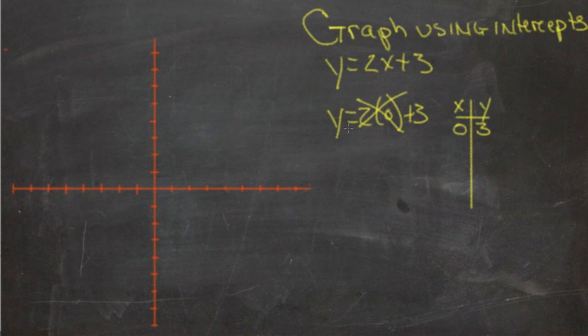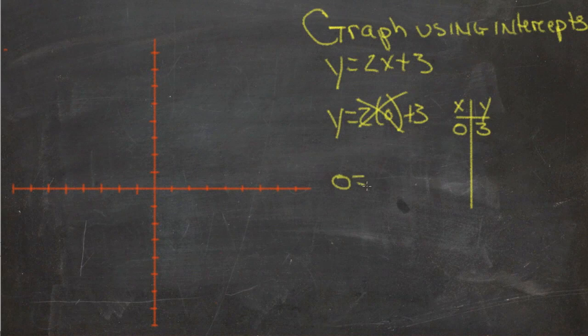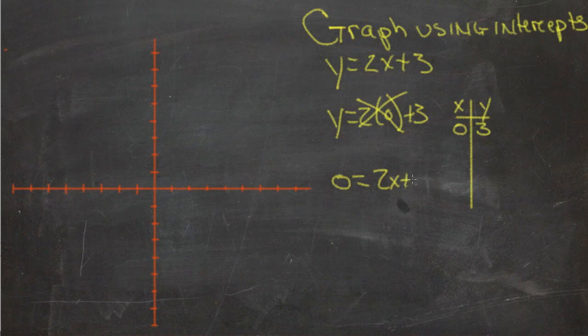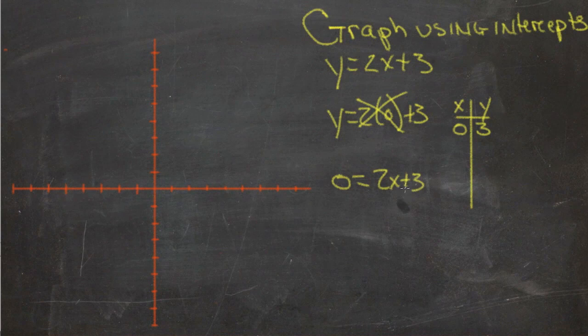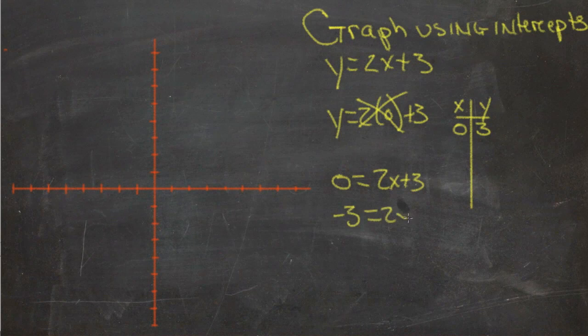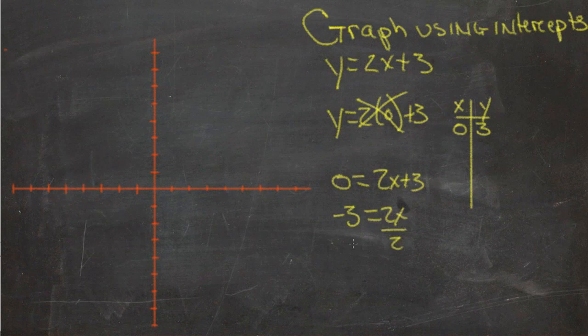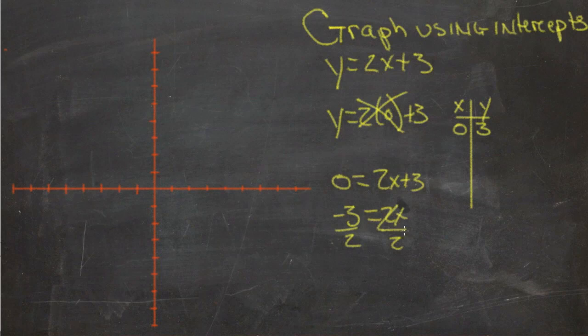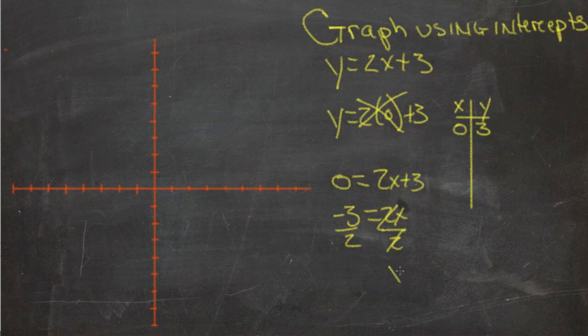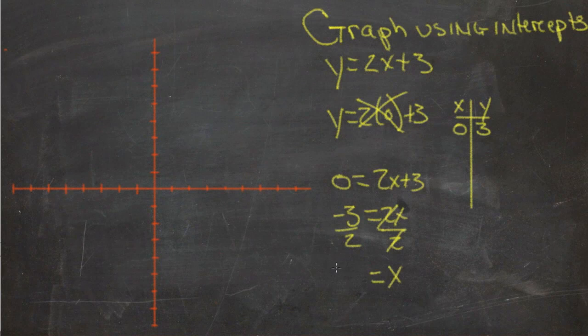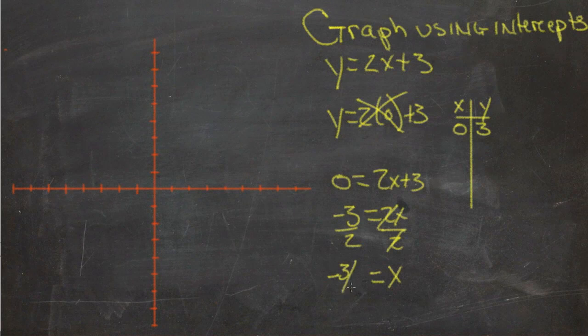And then we'll substitute in 0 for y and we get 0 equals 2x plus 3. So then we need to move the 3 to the other side. We get negative 3 equals 2x, divide by 2, divide by 2, and we get x is the same thing as negative 3 halves.